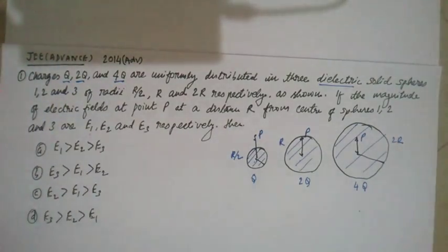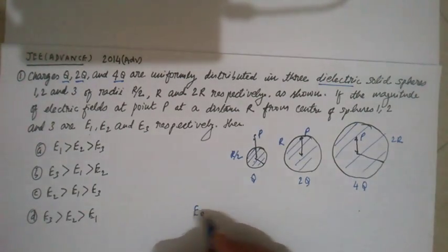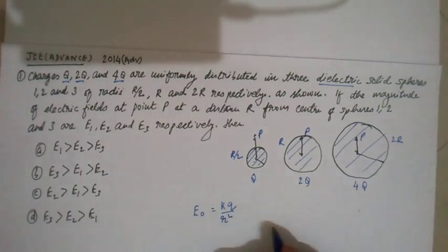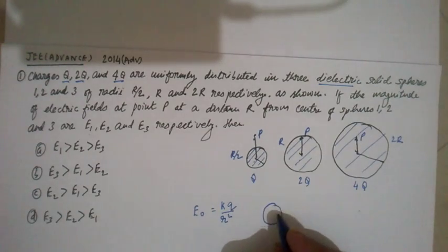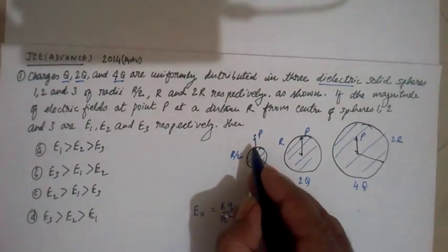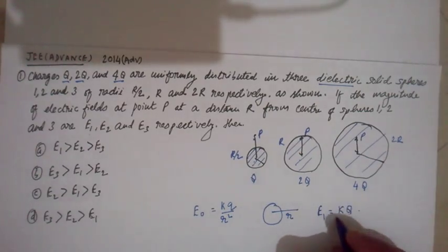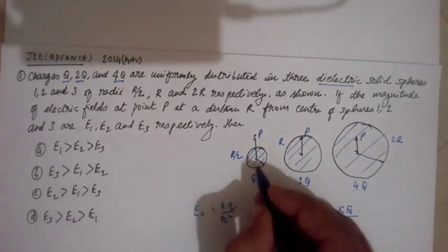What is electric field outside a sphere? The formula is KQ/r², where r is the distance from the center.